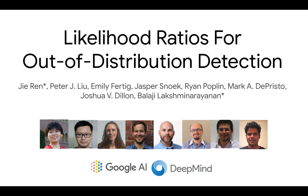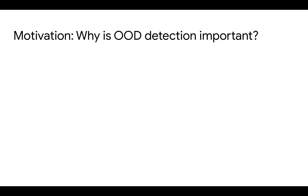Hello, here is a presentation of the paper "Likelihood Ratios for Out-of-Distribution Detection." This is a joint work with people in Google AI and DeepMind.